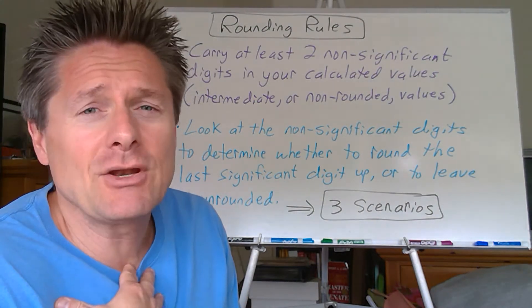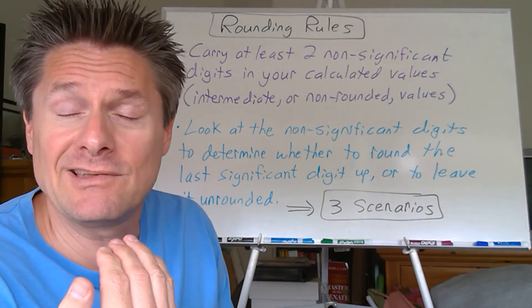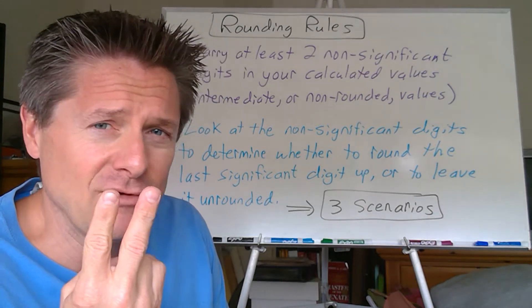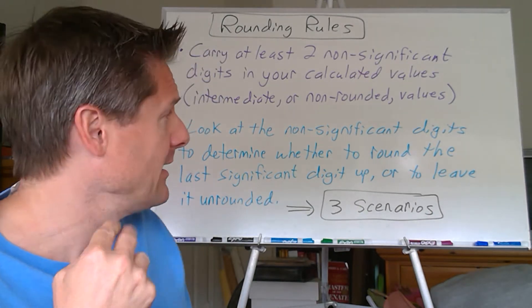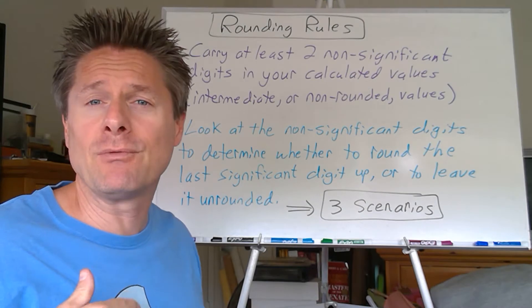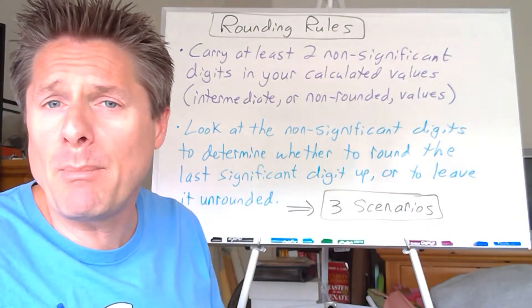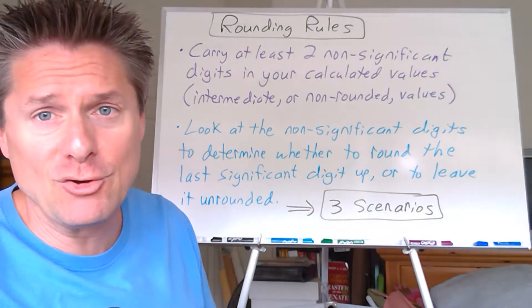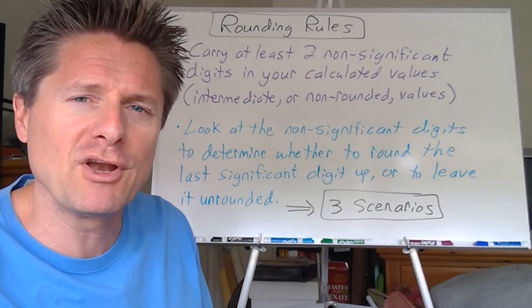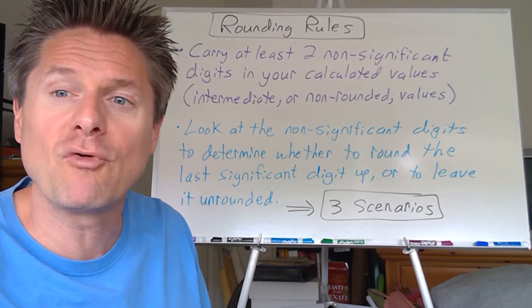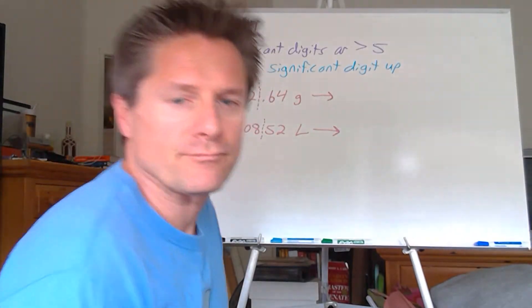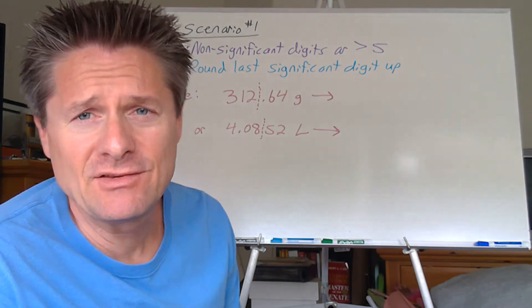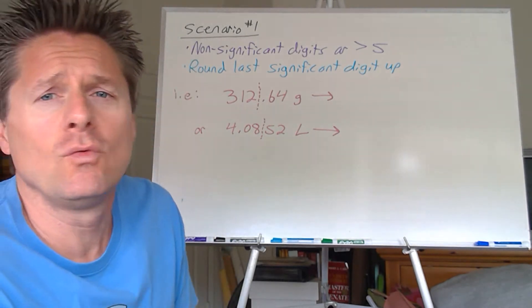There are three scenarios — at least in my general chemistry class. We're going to apply the statistics rules. In introductory chemistry I only give you two scenarios, but in general chemistry I'll give you three. I'm going to put them on the board, show you what we do when they come into play, and you'll be good to go. You're probably familiar with the first two; the third one might be a little weird.